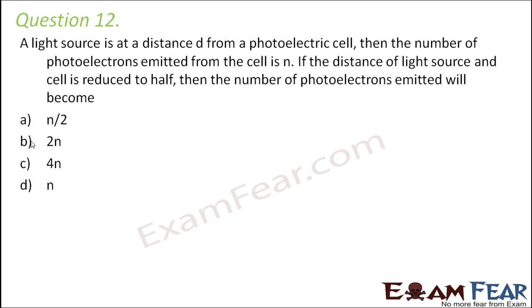Question number 12. A light source is at a distance d from a photoelectric cell and the number of photoelectrons emitted is N. If the distance between the light source and the cell is reduced to half, what will the number of photoelectrons emitted become? Let's consider what happens as the distance between the light source and the photoelectric cell changes.